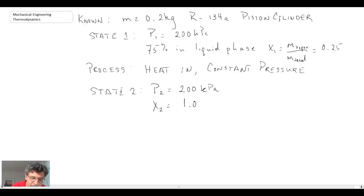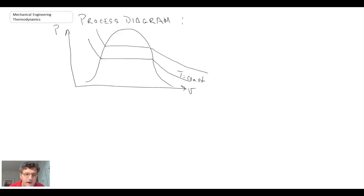Taking a look at this on a process diagram, we have isotherms on a PV diagram. We're starting at state 1, going through heat addition with a constant pressure process, and we end at the saturated vapor line at state 2. That's what our process looks like on a PV diagram.